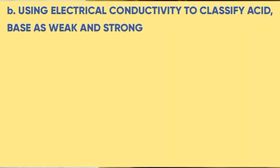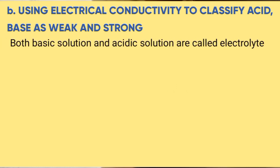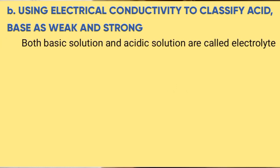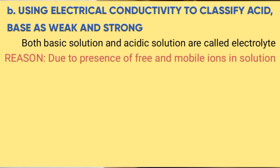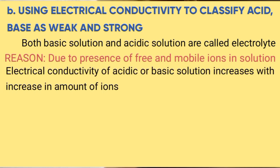Using electrical conductivity to classify acid and base as weak and strong. Both basic solution and acidic solution are called electrolytes due to the presence of free and mobile ions. The conductivity of an acidic or basic solution increases with increase in amount of ions.